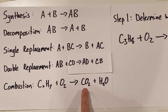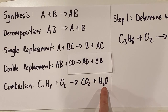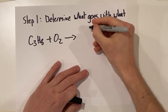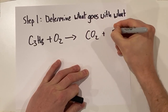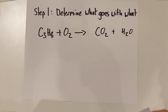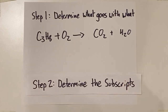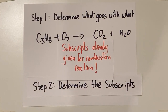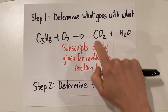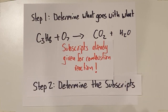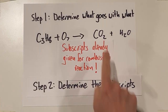You'll notice that the products for combustion reactions are always carbon dioxide, CO2, and water, H2O. So, we'll go ahead and put CO2 and H2O as our products for this reaction. Step two is to determine the subscripts on the products. One nice thing about a combustion reaction is that the subscripts are already given to us. CO2 — we already know that carbon dioxide has one carbon and two oxygens. Same thing with water, H2O, we already know the subscripts. So, if you ever have a combustion reaction, determining the subscripts is really straightforward.